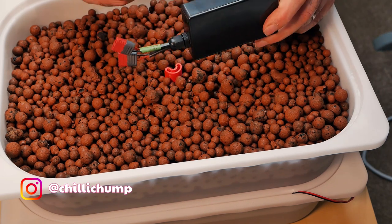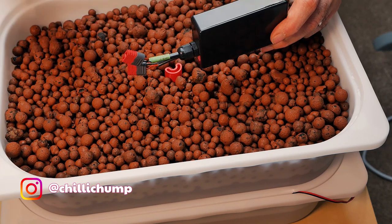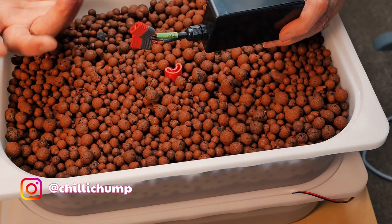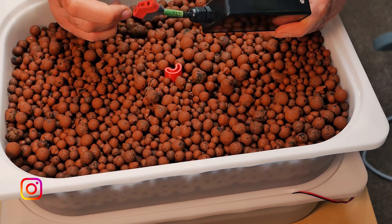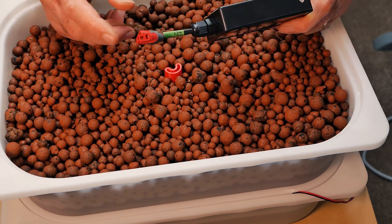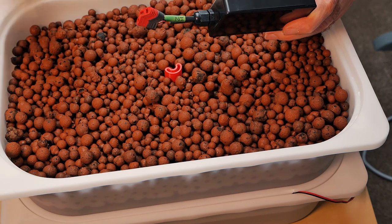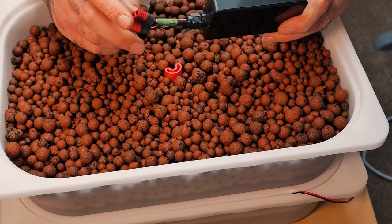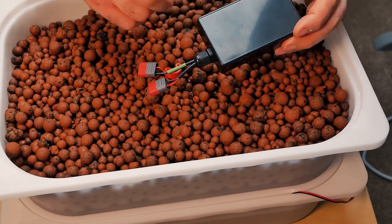This allows me to set an interval, set how long I want the pump to be on for. And I can use it off a battery so I can use it inside my greenhouse with 12 volts, or I can plug it into the mains using a 12 volt adapter. Let's go to the computer and program this.